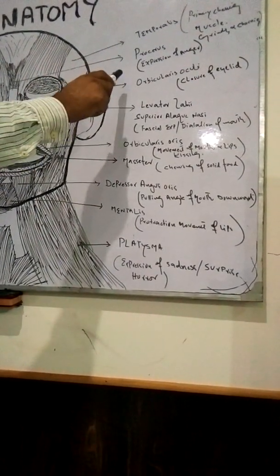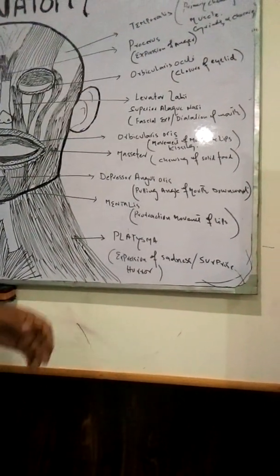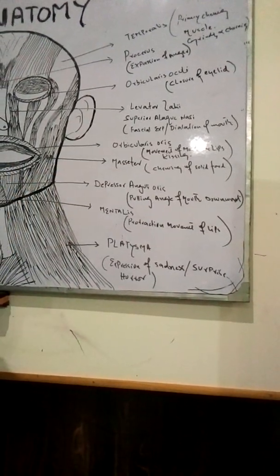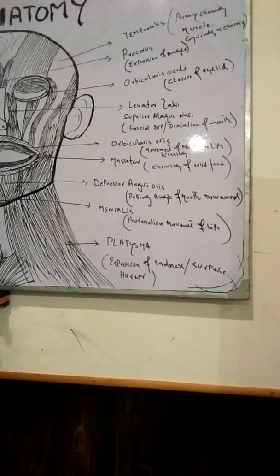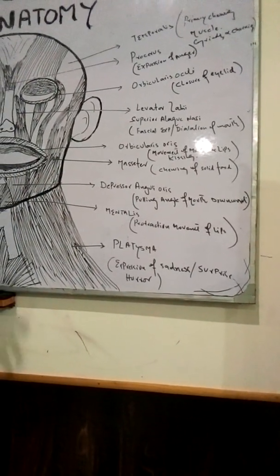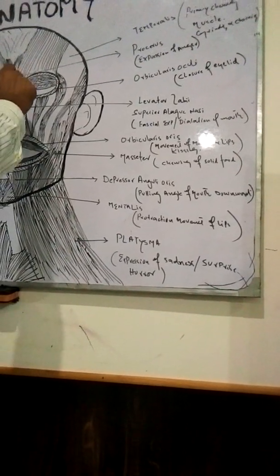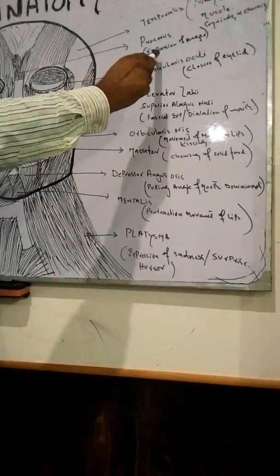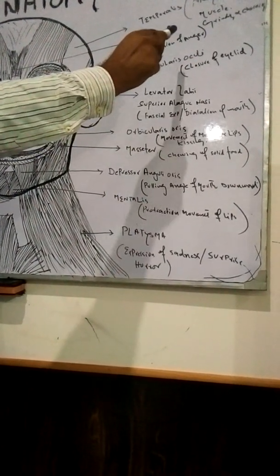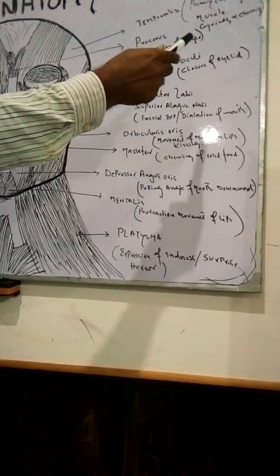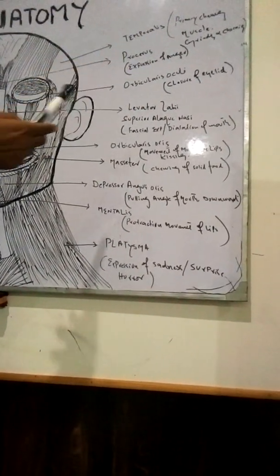The second one is the corrugator muscle. The corrugator muscle helps in the expression of anger. If someone is feeling angry, wrinkles are shown on the forehead, and the corrugator muscle especially helps in expressing anger.